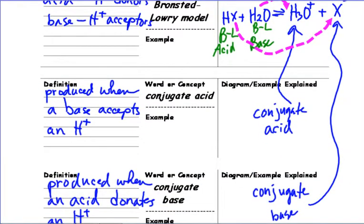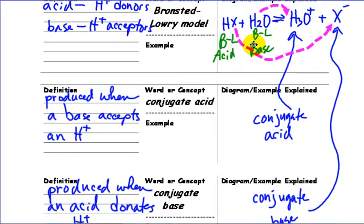Conjugate acid and conjugate base, you can see here the conjugate acid is something that is produced when a base accepts an H plus. So H3O would be the conjugate acid. And also going in reverse, it behaves like an acid.